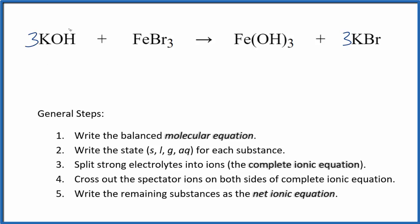The potassiums are balanced, and we have three hydroxides. That's okay. We have three hydroxides here and one iron on each side. So this is the balanced molecular equation.